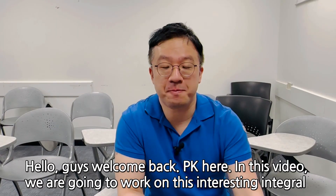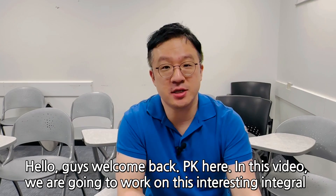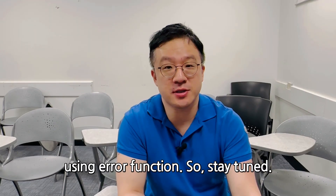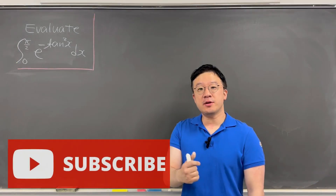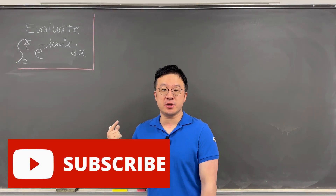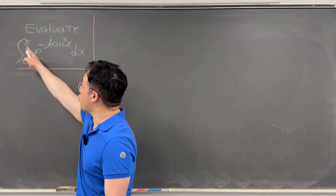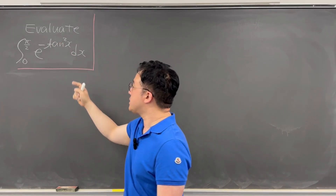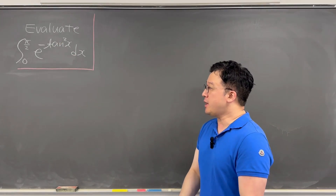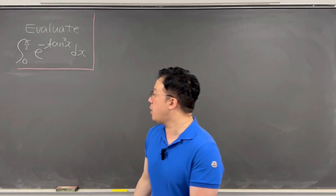Hello guys, welcome back. PK here. So in this video, we're going to be working on this interesting viewer-suggested integral using error functions. So stay tuned. Here's the question — evaluate this integral from 0 to π/2 of e to the power of negative tangent squared x dx. I'll be representing the answer for this integral using the error function.